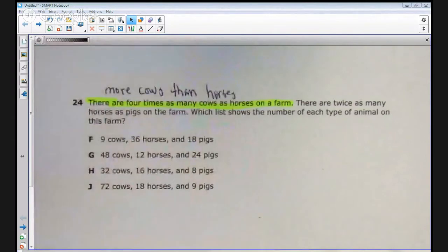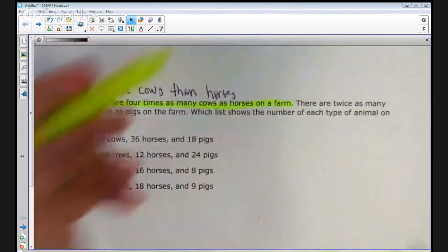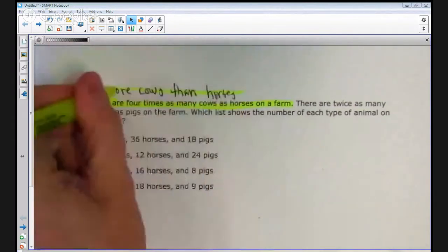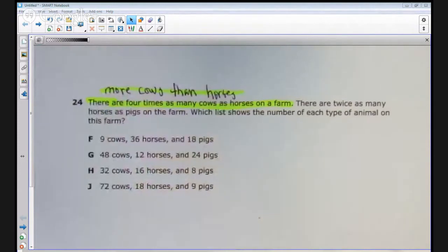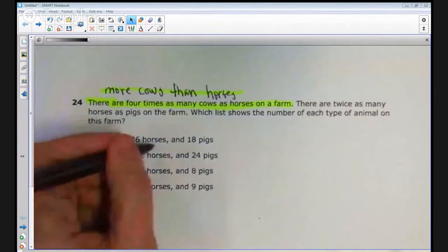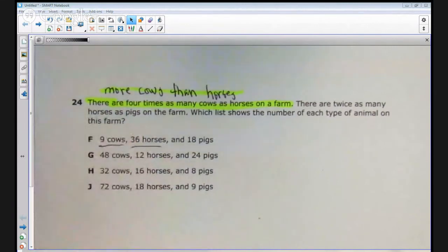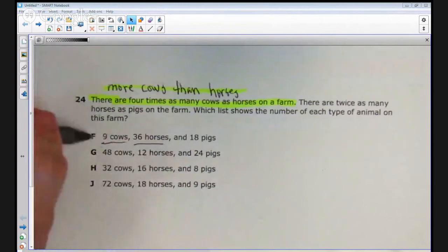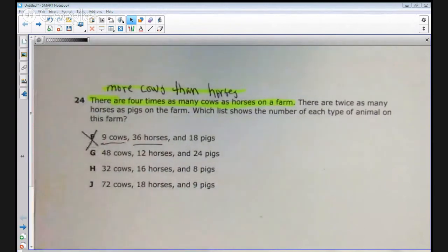And specifically, there's four times as many cows as horses. But more cows than horses is really what that's telling us. If you look at the answer choices, you'll see that in answer choice F, there are nine cows and 36 horses. That is not more cows than horses. So we can go ahead and cross out answer choice F.